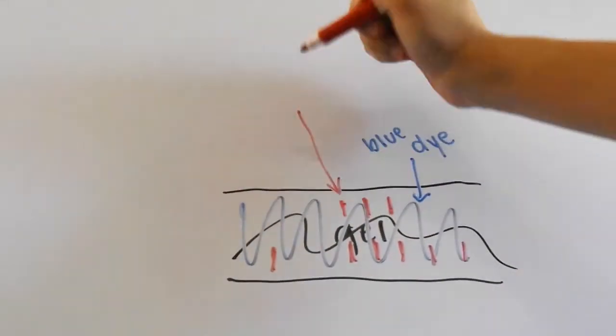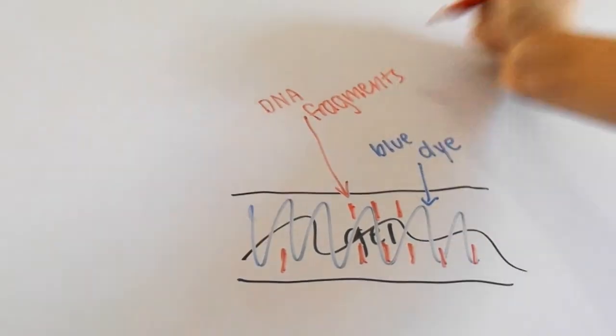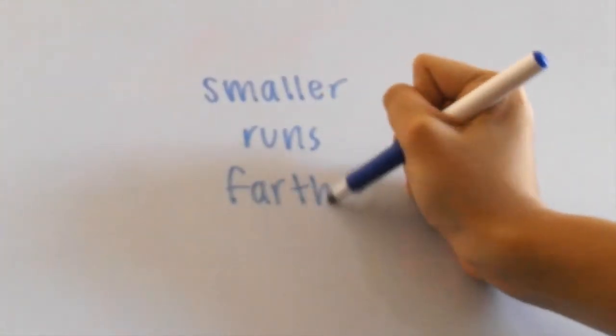An important thing to know is that the smaller fragments run through the gel farther than the larger ones. That's because the gel is more of an obstacle for the large fragments.